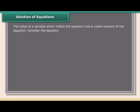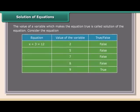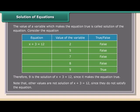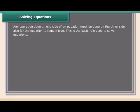Solution of equations: The value of a variable which makes the equation true is called the solution of the equation. For example, 9 is the solution of x + 3 = 12 since it makes the equation true. Other values are not solutions of x + 3 = 12 since they do not satisfy the equation. Any operation done on one side of an equation must be done on the other side also for the equation to remain true. This is the basic rule used to solve equations.